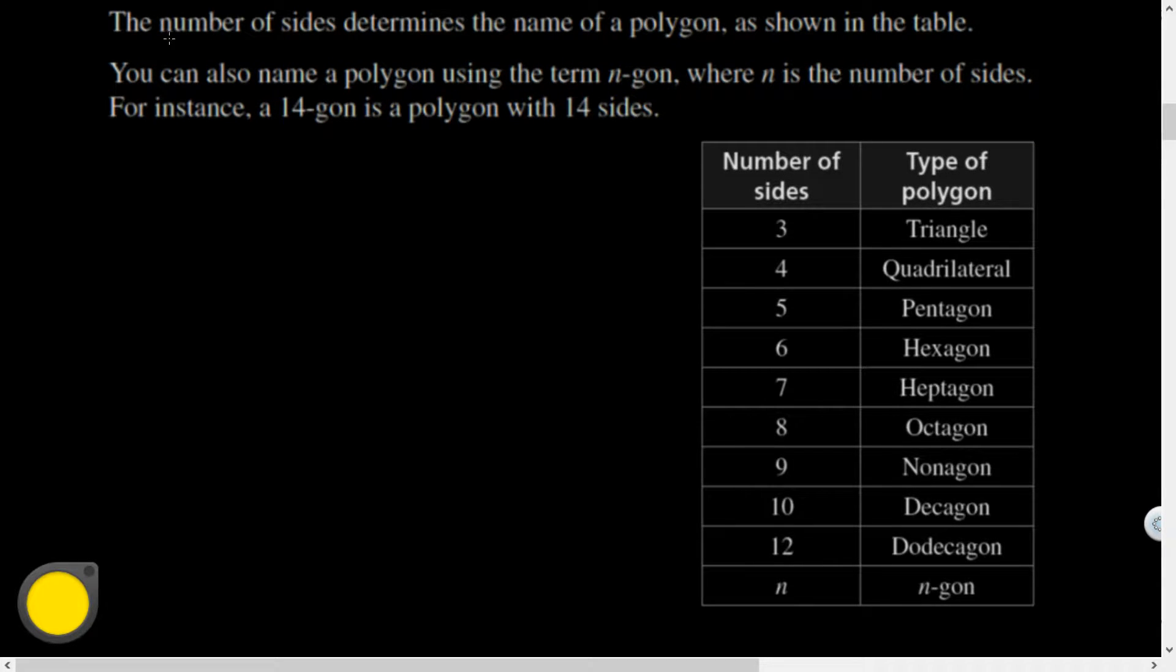You can name a polygon by listing the vertices in consecutive order. So here we have polygon ABCDE. Theoretically, you don't have to start at A, so it could have been BCDEA. You also could have gone backwards, but typically when we're naming polygons, we're going to select vertices that are convenient for us to work with. The number of sides determines the name of a polygon. You can also name a polygon using the term N-gon, where N will be the number of sides that you have. For instance, a 14-gon is a polygon with 14 sides.